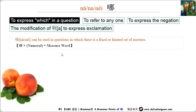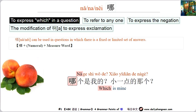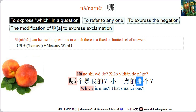哪 is used to raise a question with limited options for answers. For example: 哪个是我的？小一点的那个。In questions, 哪 is often used with a measure word. 那 means 'that' — it looks like 哪, but without the radical 口 on the left side. 哪 refers to a specific thing in the question. In spoken language, when used with a measure word, 哪 is often pronounced like 哪. For example: 哪个是我的？